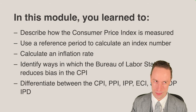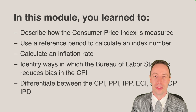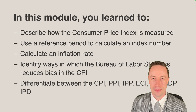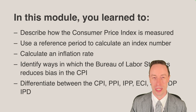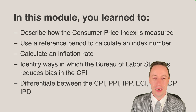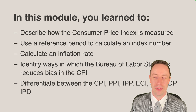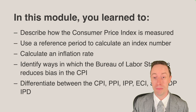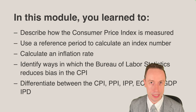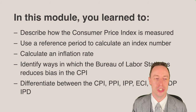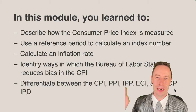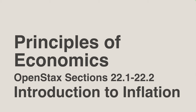That wraps up this module. Hopefully you learned how to describe how the consumer price index is measured, how to use a reference period to calculate an index number, how to calculate an inflation rate, how to identify ways in which the Bureau of Labor Statistics reduces bias in the CPI, and how to differentiate between the CPI, PPI, IPP, ECI, and GDP IPD. See you next time.